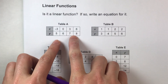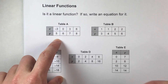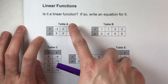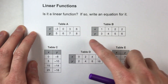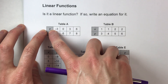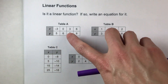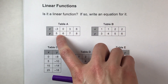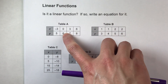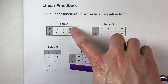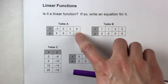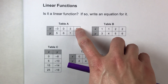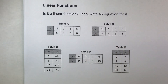For table A, let's start with deciding if it's a function first. If it's a function, for every input there's only one output — meaning for every x value, there's only one possible y value. For table A: negative 3 gives us 5, 0 gives us 6, 3 gives us 7, and 6 gives us 8. Every single x value gave us just one y value, so it is a function.